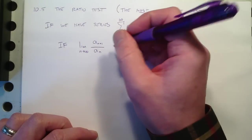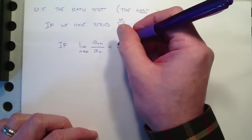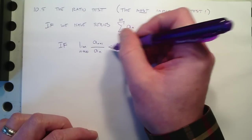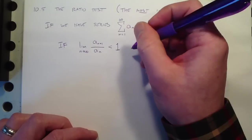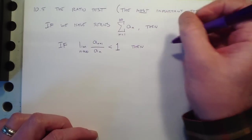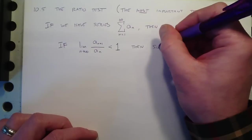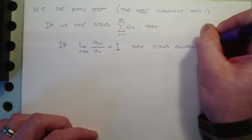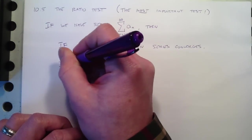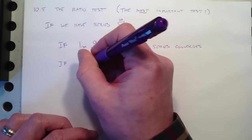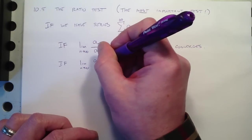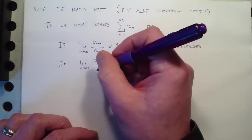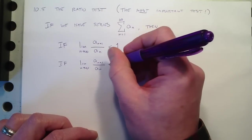If this limit is less than 1, and since the terms are all positive or all negative, it can't be negative. So that means like between 0 and 1. Then the original series converges. So if this limit is less than 1 term divided by the term before it, right? That's what this is.